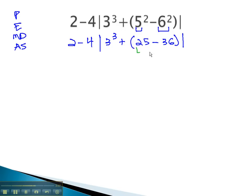Continuing inside that parentheses, we'll do the subtraction. We now have 2 minus 4, absolute value of 3 cubed plus 25, minus 36. We add the opposite, we see it's going to be negative, and 36 minus 25 is 11.